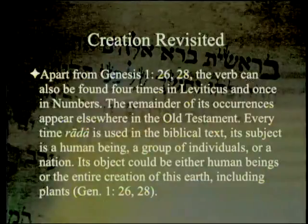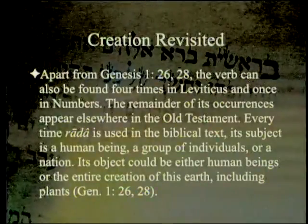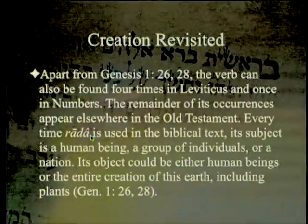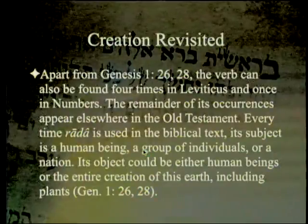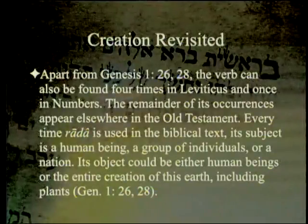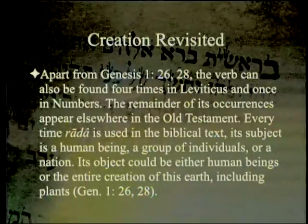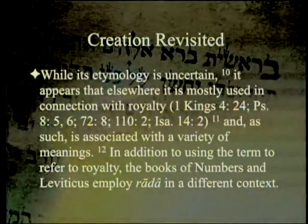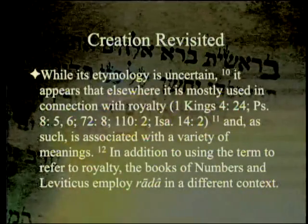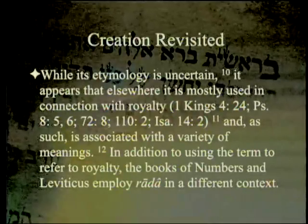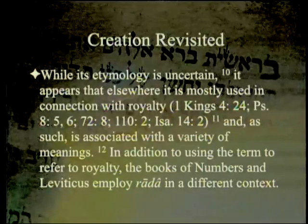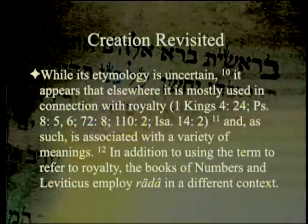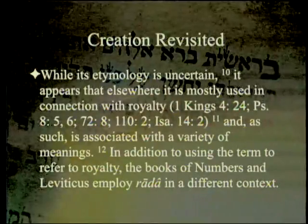Every time 'radah' is used in the biblical text, its subject is a human being, a group of individuals, or a nation. Its object could be either human beings or the entire creation of this earth, including plants. While its etymology is uncertain, it appears that elsewhere it is mostly used in connection with royalty. As such it is associated with a variety of meanings in addition to royalty — humans are the royalty of life on our planet.